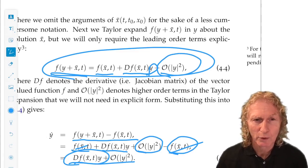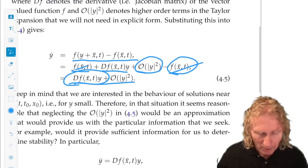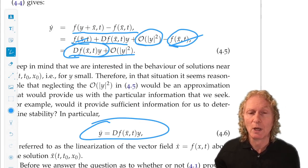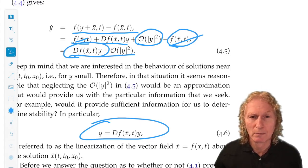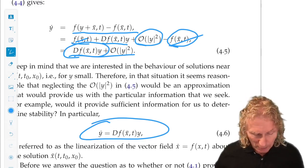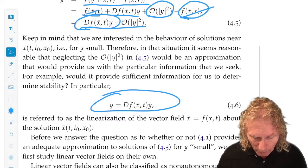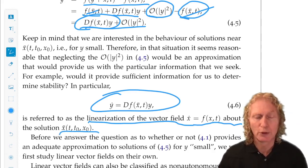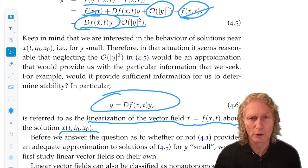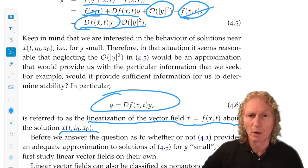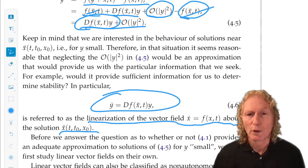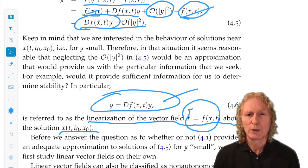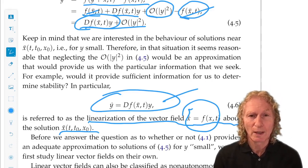So, we have an equation for Y dot. Y is the deviation from the solution of interest, X̄. And we have a linear expression, n by n Jacobian matrix multiplied by Y, vector multiplication, and the nonlinear terms. Now, we're interested in the behavior near X̄. So, that means the behavior of this equation for Y small. It seems reasonable that if we're interested in the behavior for Y small, that this equation, the linear equation, will be a good approximation to the behavior.